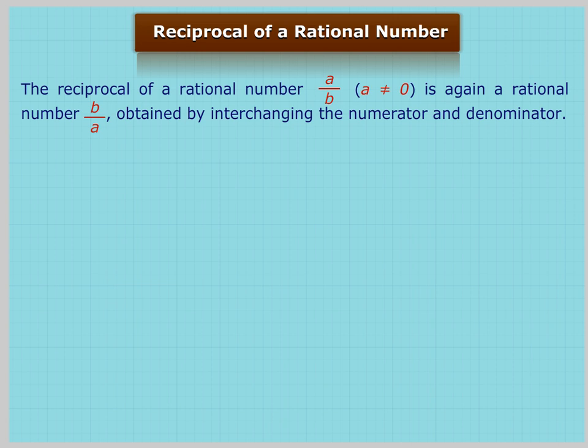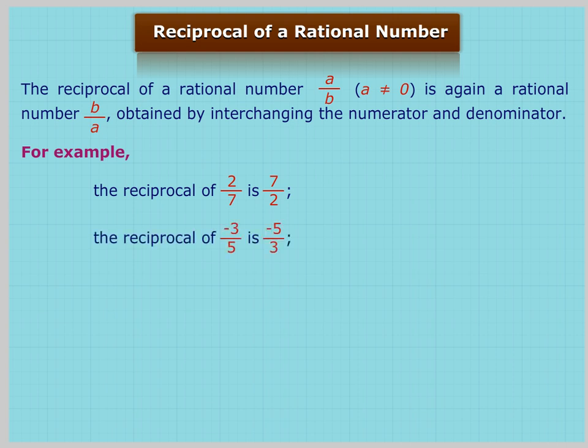Reciprocal of a rational number. The reciprocal of a rational number a/b, where a is not equal to 0, is again a rational number b/a, obtained by interchanging the numerator and denominator. For example, the reciprocal of 2/7 is 7/2; the reciprocal of -3/5 is -5/3; the reciprocal of 2 is 1/2.